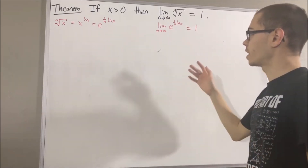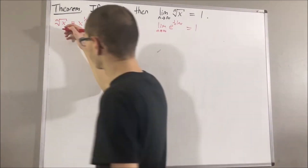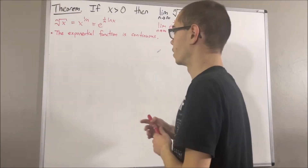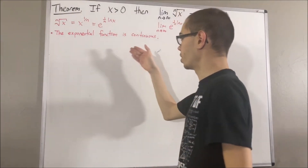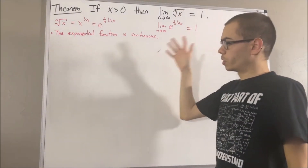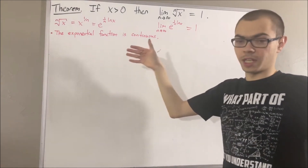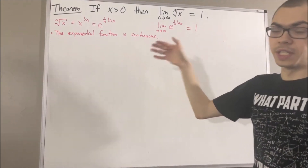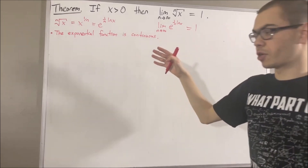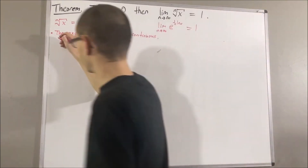Now we know that the exponential function is continuous. And so in regards to continuity, we are going to be using the sequential criterion for continuity in our proof. The sequential criterion for continuity states the following.